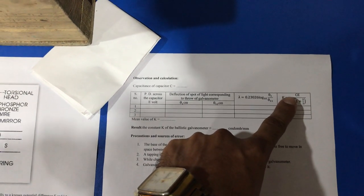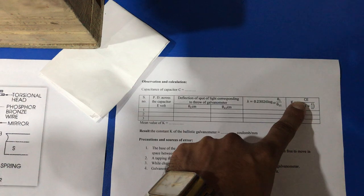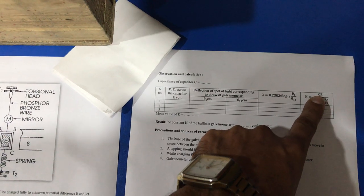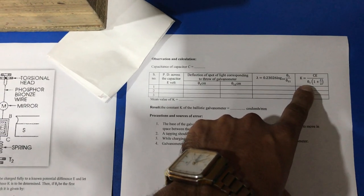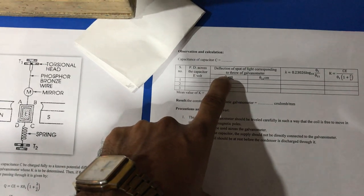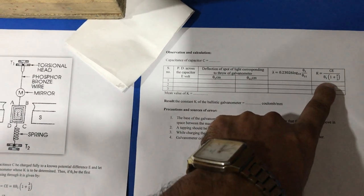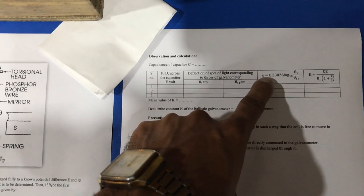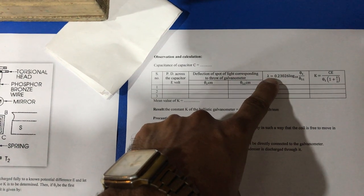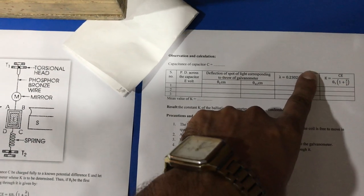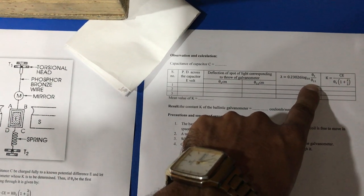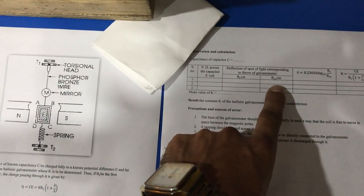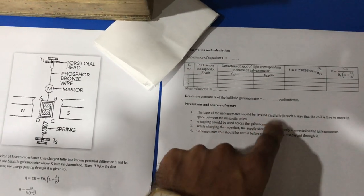Here C is the value of standard capacitance, E is the value of voltage applied through battery. Lambda we calculate using this formula: λ = 0.23026 × log₁₀(θ₁/θ₁₁), where θ₁₁ is the deflection of eleventh throw. Thank you very much.